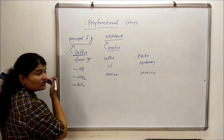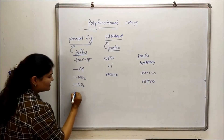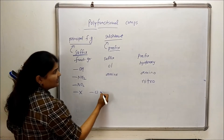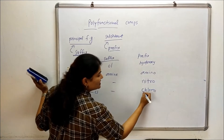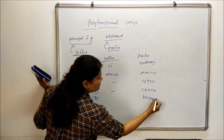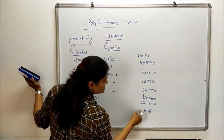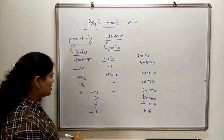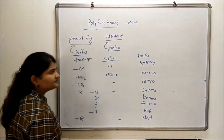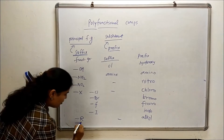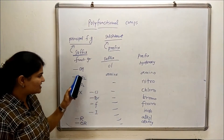Certain groups are always written as substituents, like nitro — we don't use it as a principal functional group, so we will always write it as a prefix. Similarly, halogens are not written as principal functional groups, so no suffix applies. The prefix for chlorine is chloro, for bromine it is bromo, for fluorine it is fluoro, and for iodine it is iodo. Alkyl groups are also always written as substituents using the alkyl prefix, and similarly the OR alkoxy group is always used in prefix format.